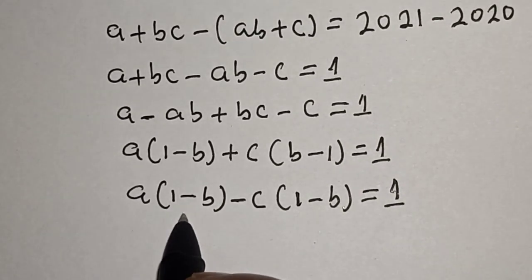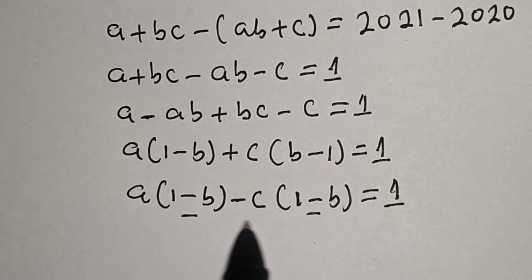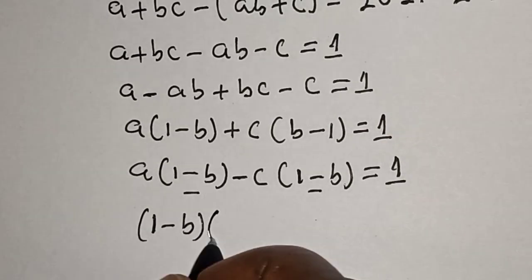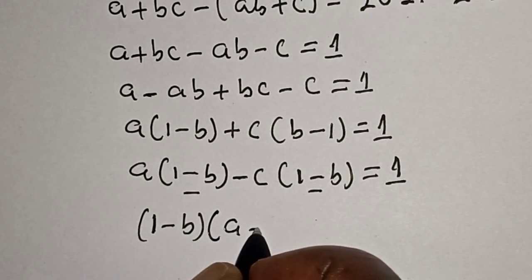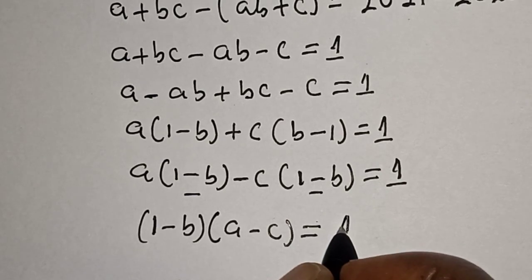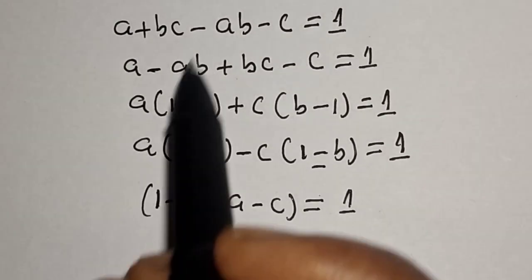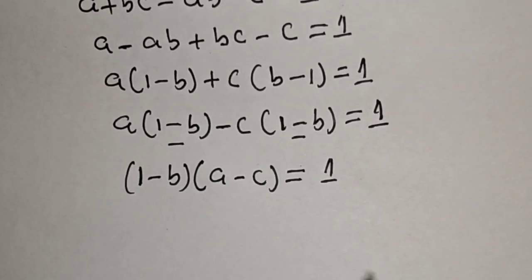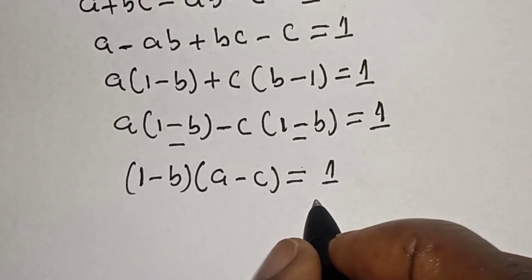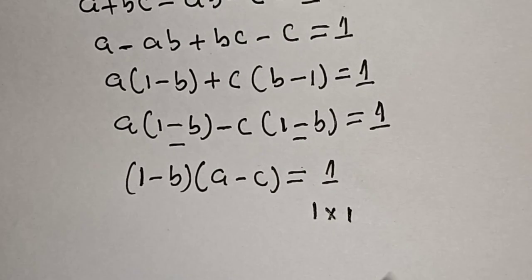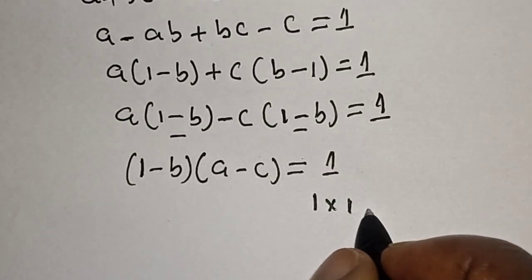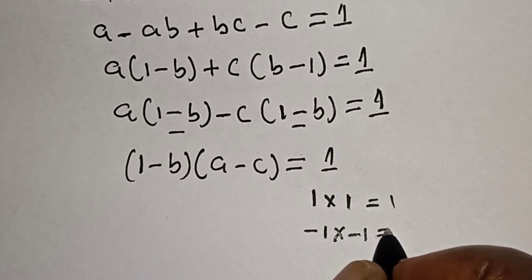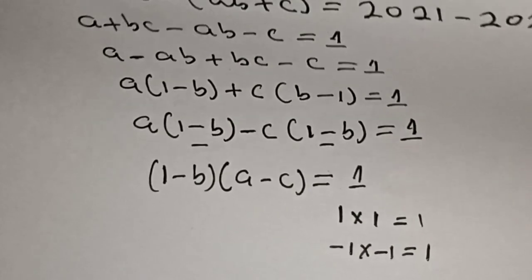We have (1 − B) in both terms, with A and −C, so factoring gives: (A − C)(1 − B) = 1. Now, since we need to find integer solutions, the product of two integers equaling 1 gives us two cases.